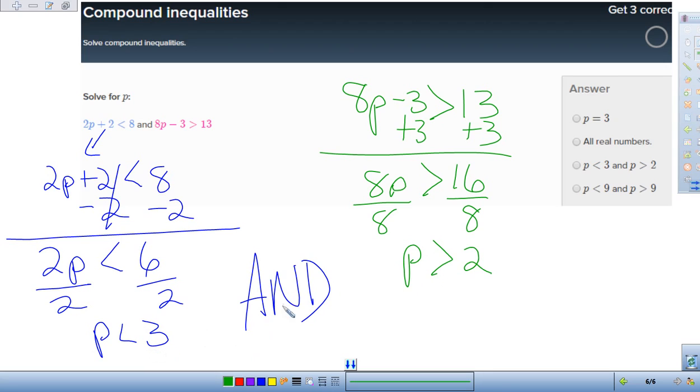So p is less than 3. And p is greater than 2. So there we have it right there. p is less than 3. And p is greater than 2.